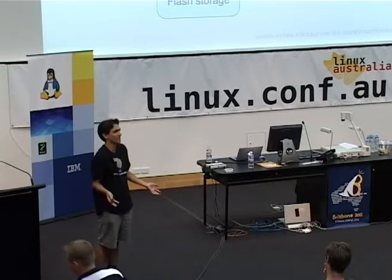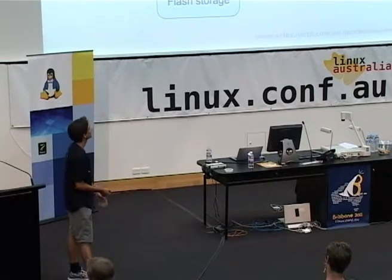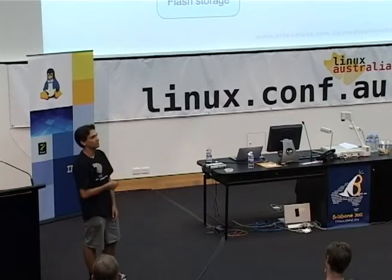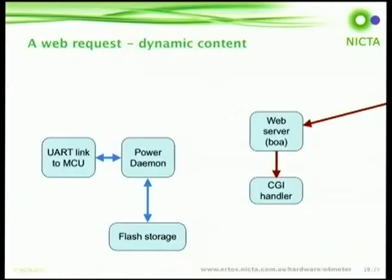Plan A was to have the power daemon have its own little database, and the CGI handler would query the power daemon saying give me the information - kind of like a database. This worked, but it was very fragile: every time you wanted to update the format of the data, you needed to change two pieces and stuff can break. The power daemon and handler talk over a socket, so you have to serialize all your data, and there's a lot of code that goes into just serializing and un-serializing - very boring and very fragile. It actually turned out to be quite a performance bottleneck.